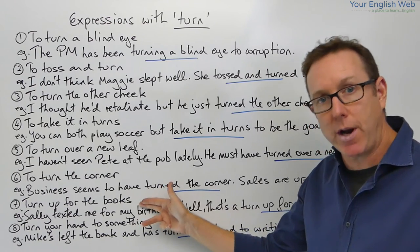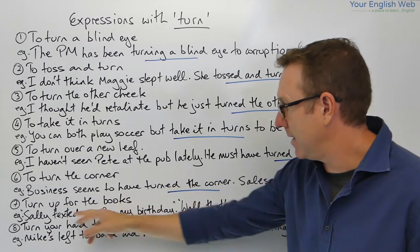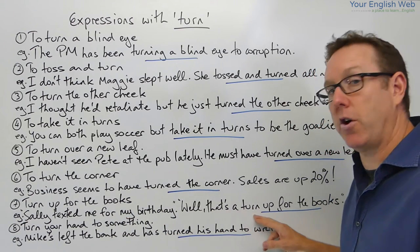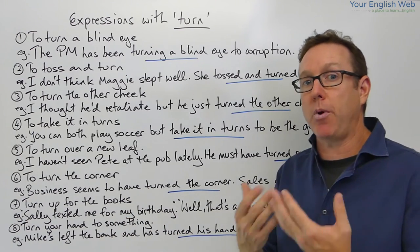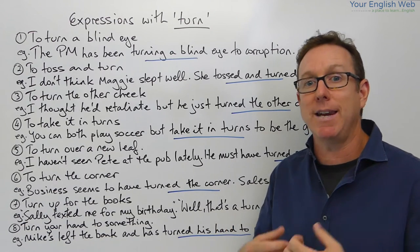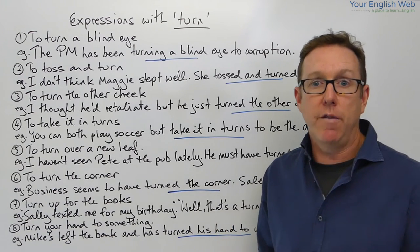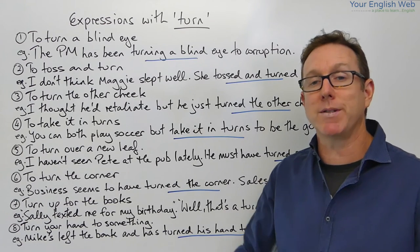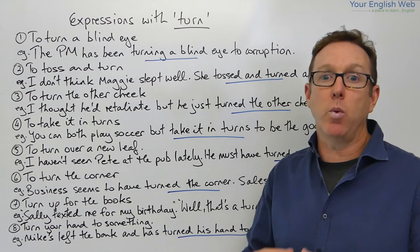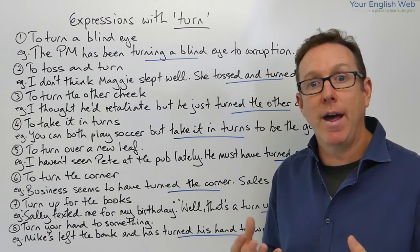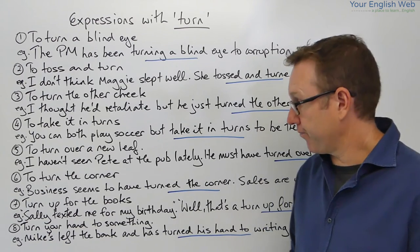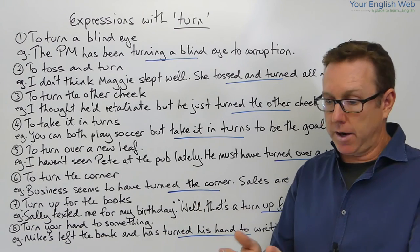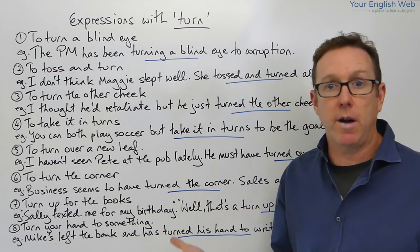Number seven: turn up for the books. Through context: Sally texted me for my birthday — well, that's a turn up for the books! It was a surprise, because Sally never sends a message for my birthday. So it was a turn up for the books — something unexpected, a surprise. Sally's text? Can't believe it — a total turn up for the books.